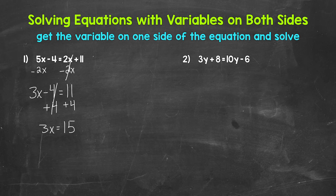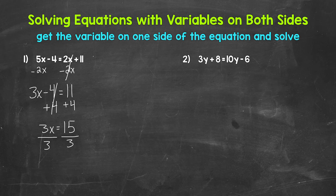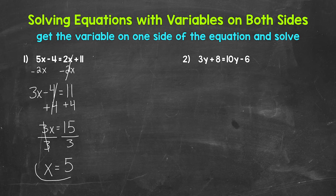So we have 3x equals 15 — 3 times x equals 15. We need to isolate x. The inverse operation of multiplication is division. So divide both sides by 3. On the left side, multiplying by 3 and dividing by 3 cancel each other out, so x is now isolated. On the right side, 15 divided by 3 gives us 5. So x equals 5. That's our solution.